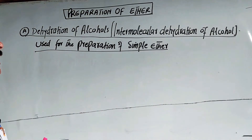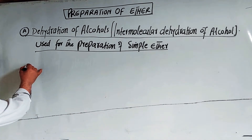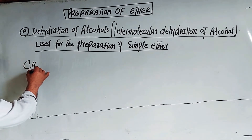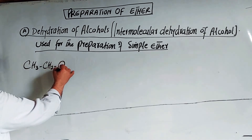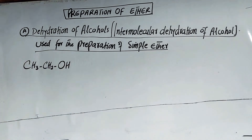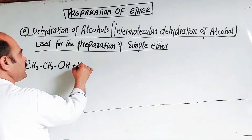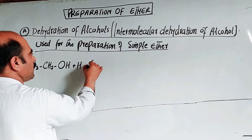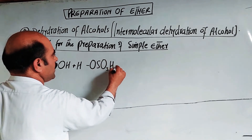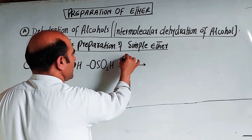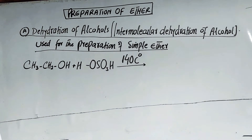Let's look at an example. We take ethyl alcohol, CH₃CH₂OH. Using sulfuric acid as the dehydrating agent, at a temperature of 140 degrees Celsius, we proceed with the reaction.